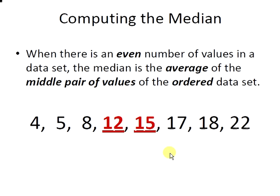When there is an even number of values in a data set the median is the average of the middle pair of values of the ordered data set. So the middle pair of values here are 12 and 15.